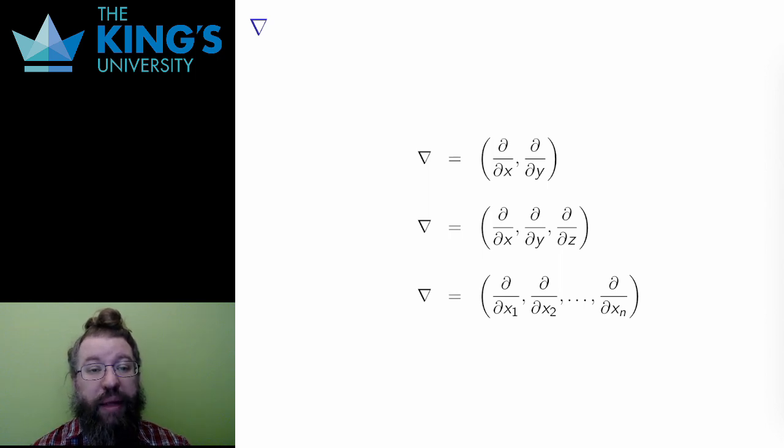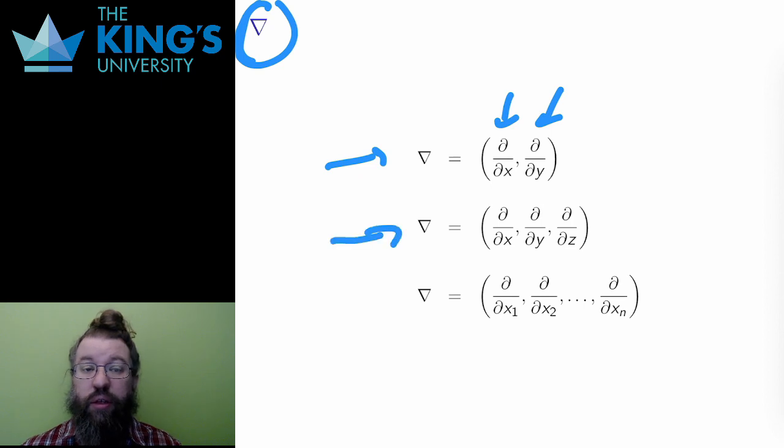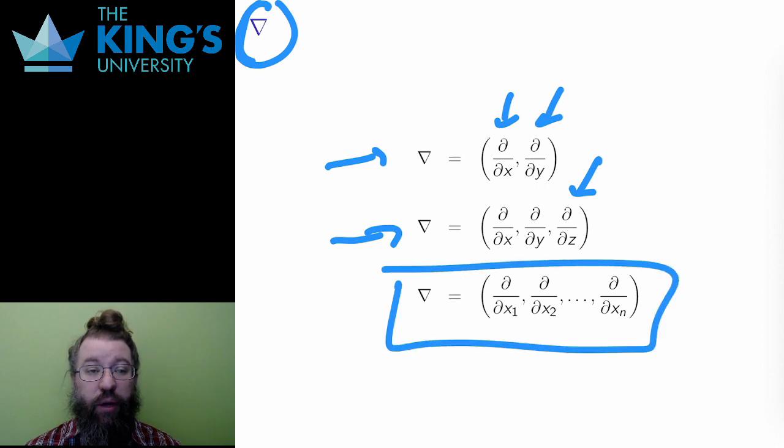The operator that makes this work is nabla, this upside-down right triangle. I used this before with scalar fields to define the gradient. This is a vector operator, where each component was a different partial derivative. In R2, nabla is the operator del over del x, del over del y. In R3, del over del z is added.